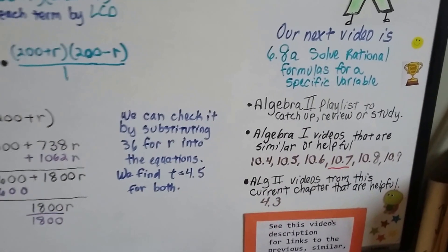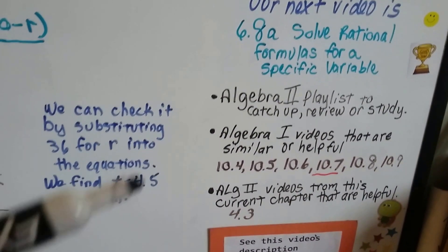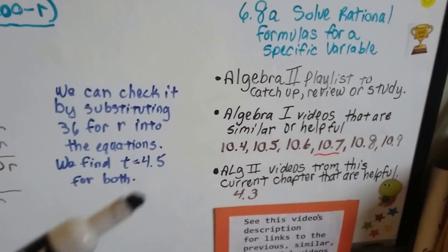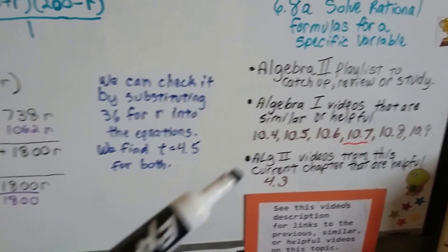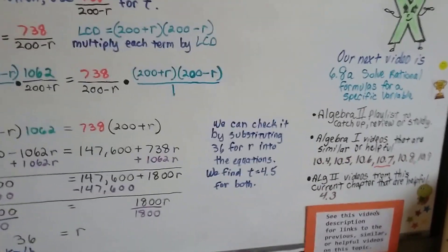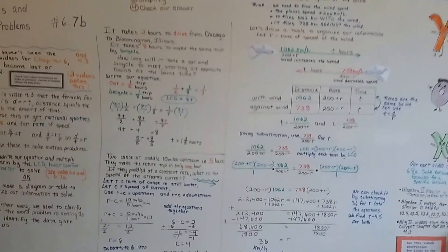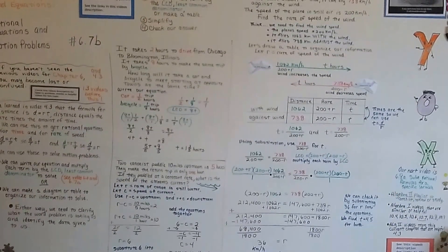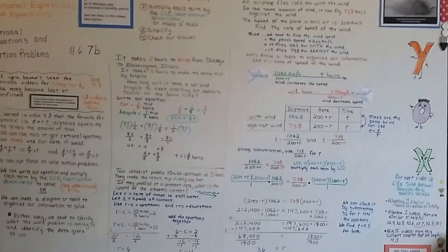So our next video is 6.8a, and we're going to solve rational formulas for a specific variable. I'm going to add this video to the Algebra 2 playlist, and there's going to be previous videos from Algebra 1 from last year that should help you, and that 4.3 video and all those Chapter 6 videos, links will be in this video's description, so you can just click on them. So, remember, they're just one click away, and it's up to you to use this information to help yourself. I hope you're doing well. I hope you're having a good day, and keep trying, and I'll see you next video. Bye.